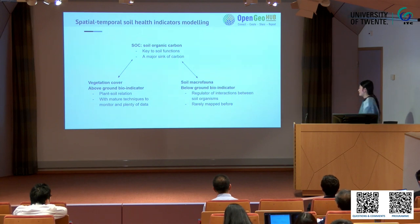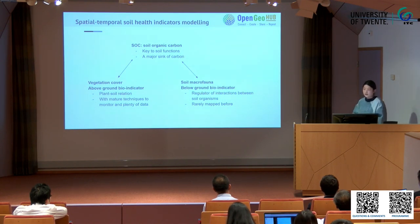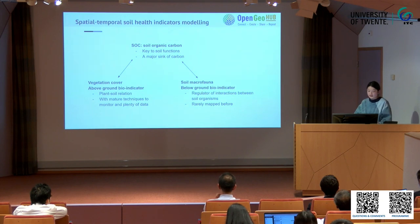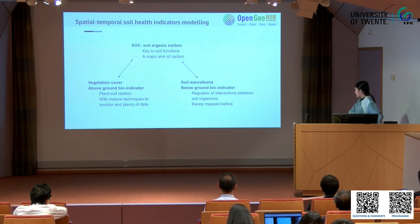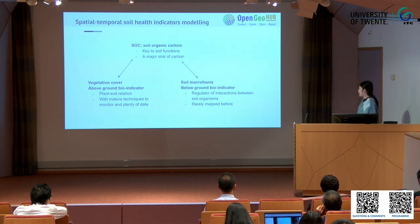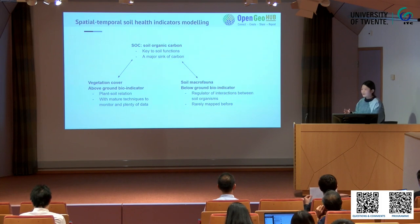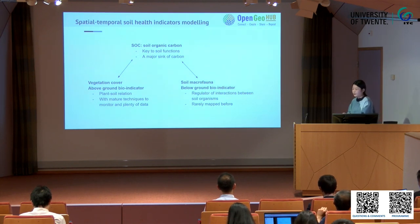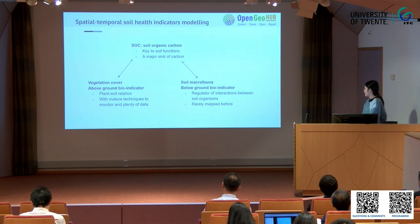Also, for vegetation cover we have very mature techniques to monitor it and plenty of data — a lot of Earth observation products like NDVI, FAPAR, EVI, and others. Another soil health indicator I want to map is soil macrofauna, which I view as below-ground bio-indicators. Macrofauna means soil organisms living underground in the soil but larger than 2 millimeters. They play the role of regulating interactions between different soil organisms. Another reason I chose this indicator is that it is rarely mapped before, which makes me a bit excited.